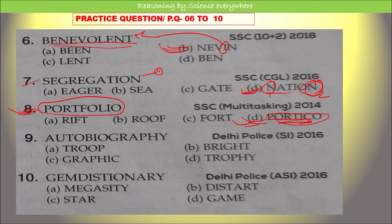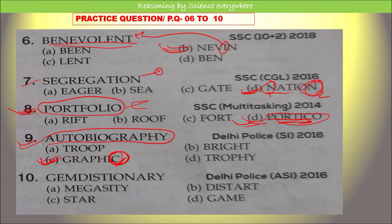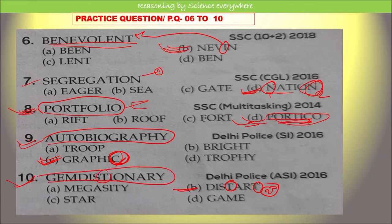In question number 9, option C is the correct answer because the alphabet 'C' is not present in the given word. For question number 10, option B is the correct answer because the word requires two T's, but the given word has only one T, so option B cannot be formed from that word.